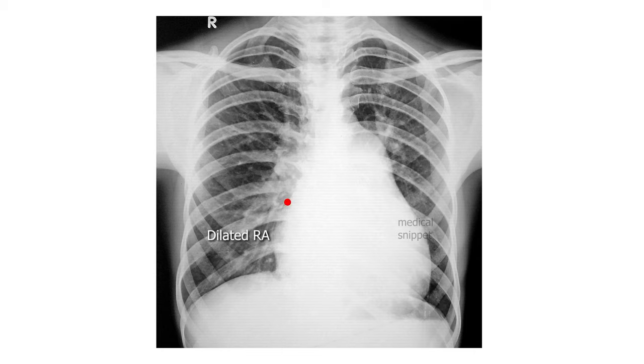In chest X-ray, the right atrium and right ventricle are dilated. Cardiac apex is formed by the right ventricle. Pulmonary artery is enlarged. There will be plethoric lung fields, that is the pulmonary vascular markings can be seen till the periphery of the lungs.